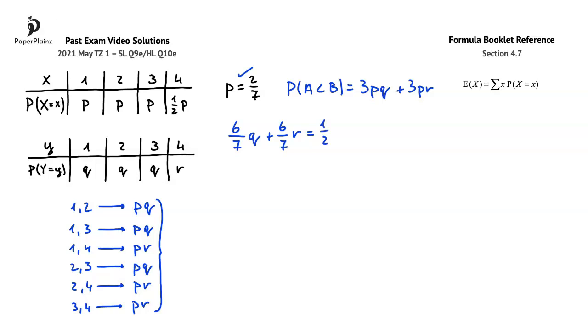Next, let's consider the probability distribution for Y. In this distribution, the probabilities must add up to 1. Therefore, we can write that 3Q plus R is equal to 1.